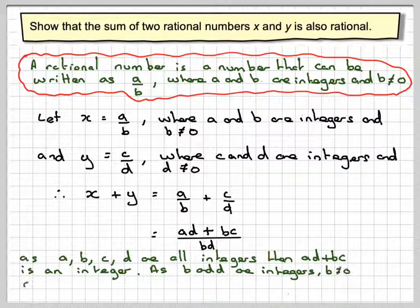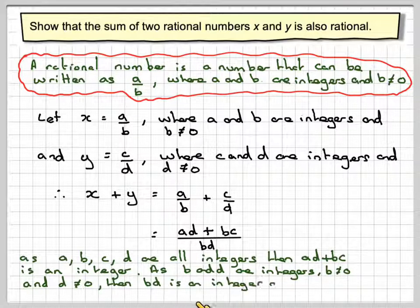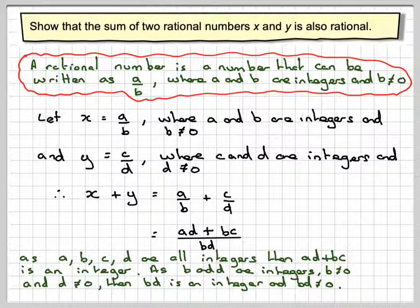Since b and d are integers, and b is not equal to 0 and d is not equal to 0, then bd is an integer and bd is not equal to 0.